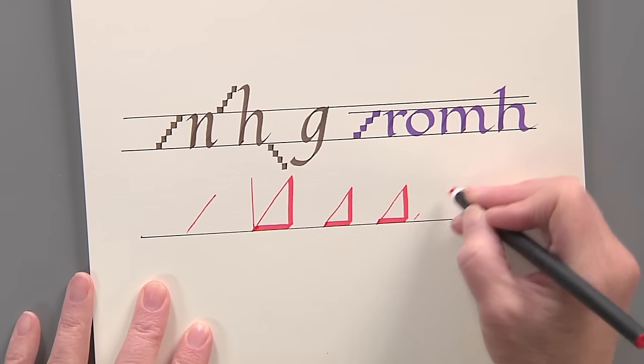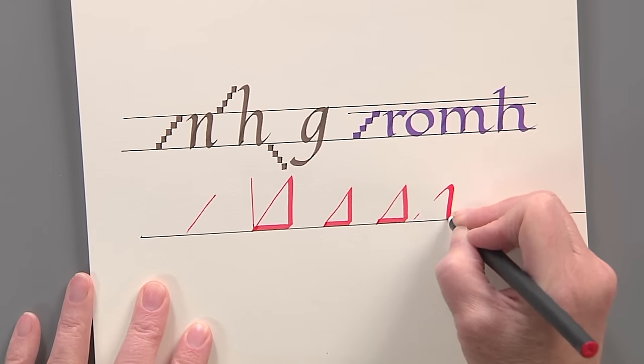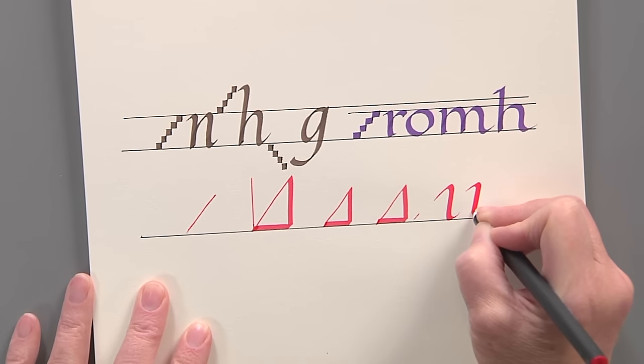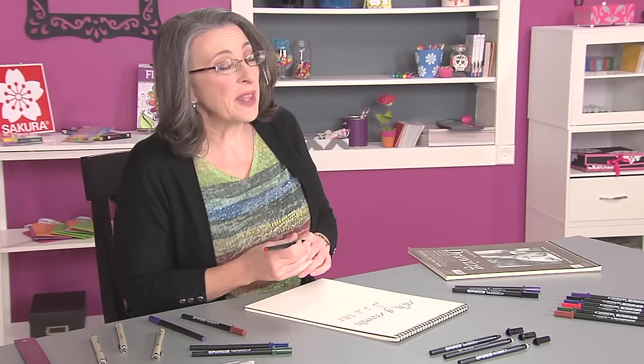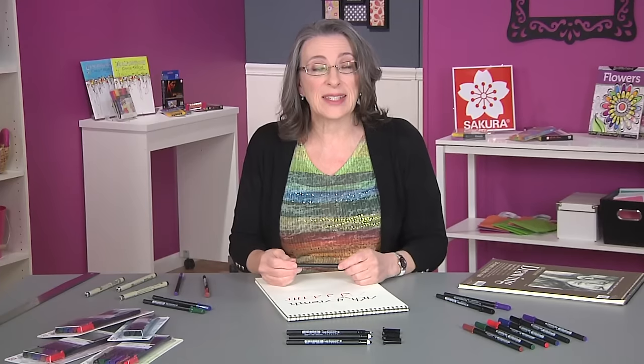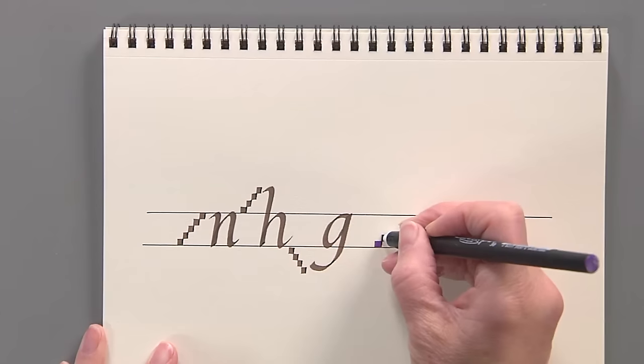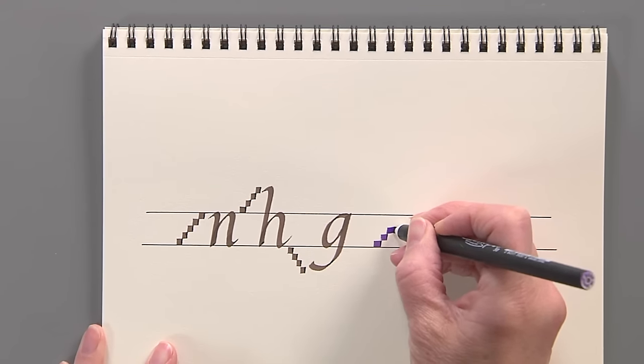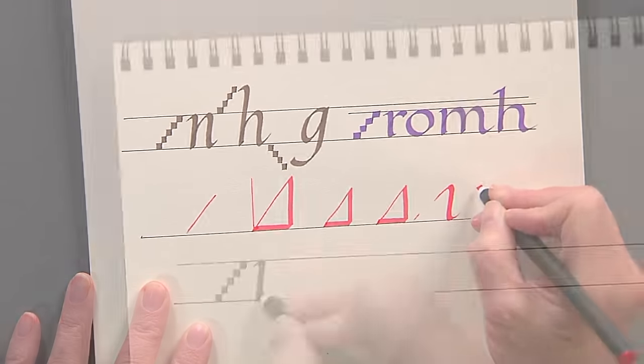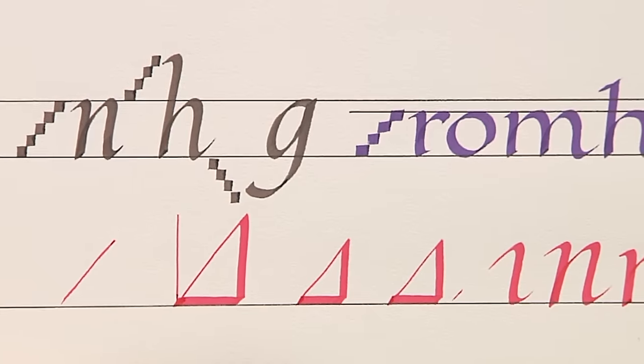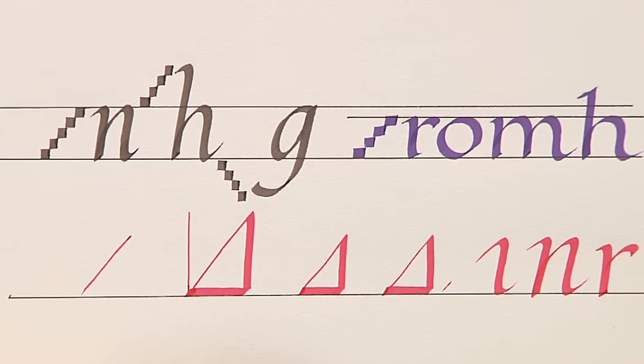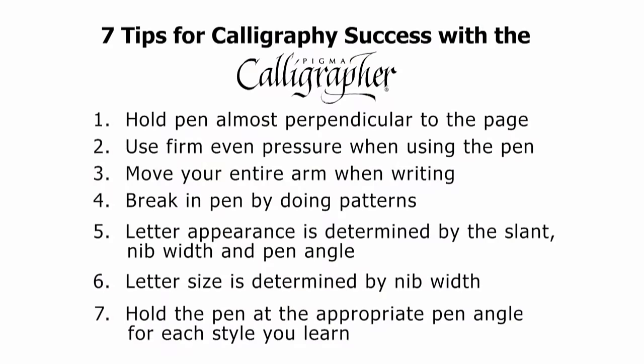The italic alphabet is done at a 35 degree angle. So the tip that I want you to remember is that you need to understand the nib widths, the pen angle, and the slant, and how the three of them interact to give you the very best possible letters. Happy lettering!